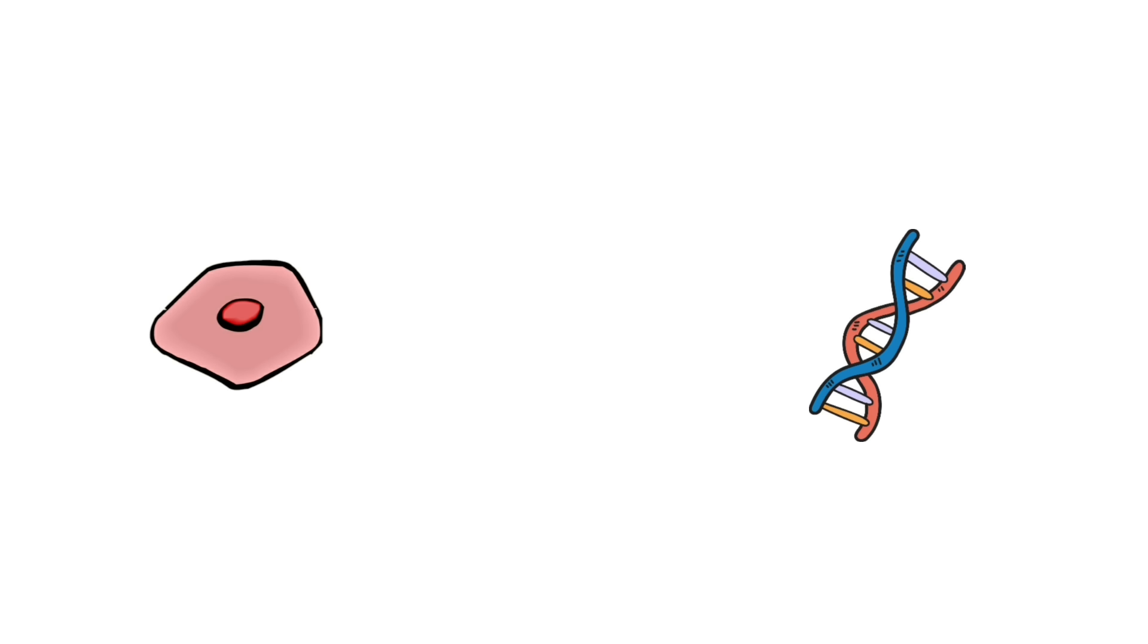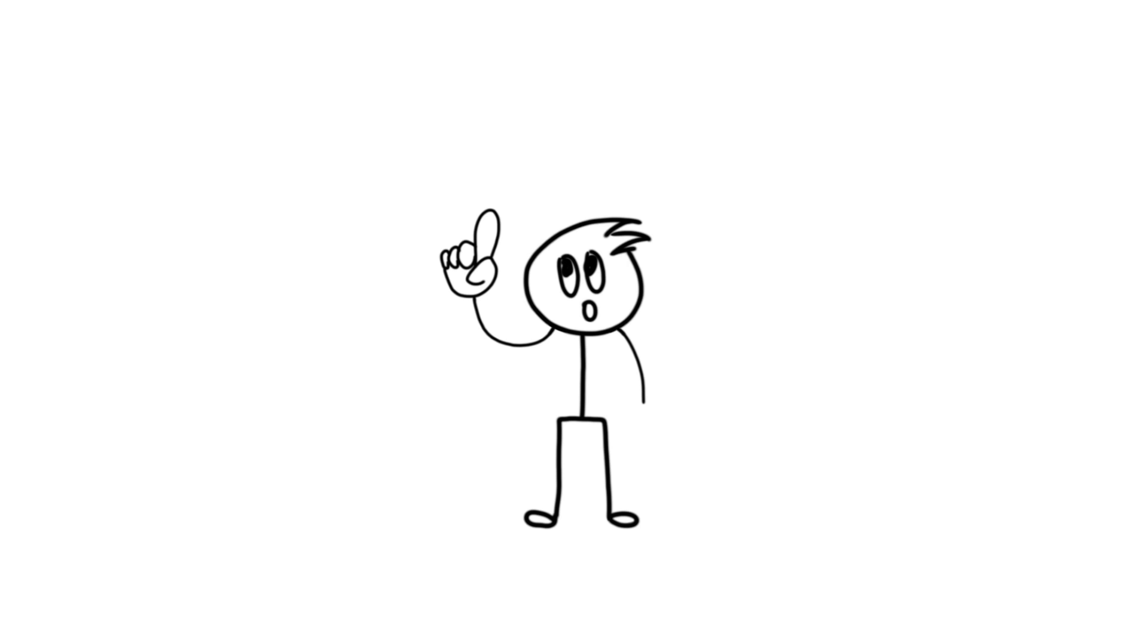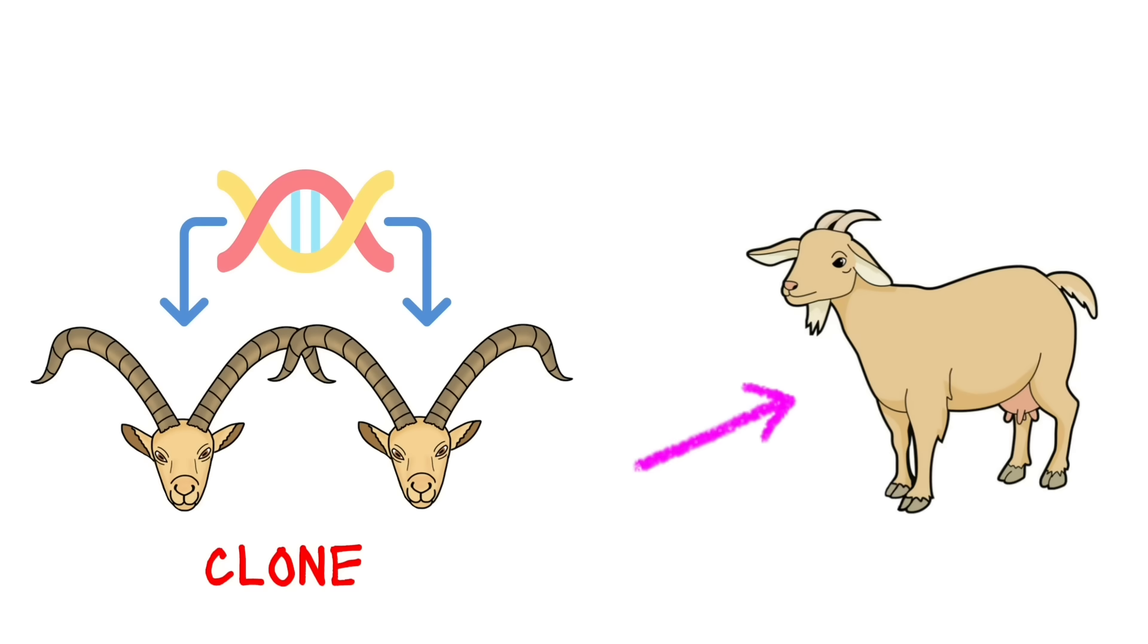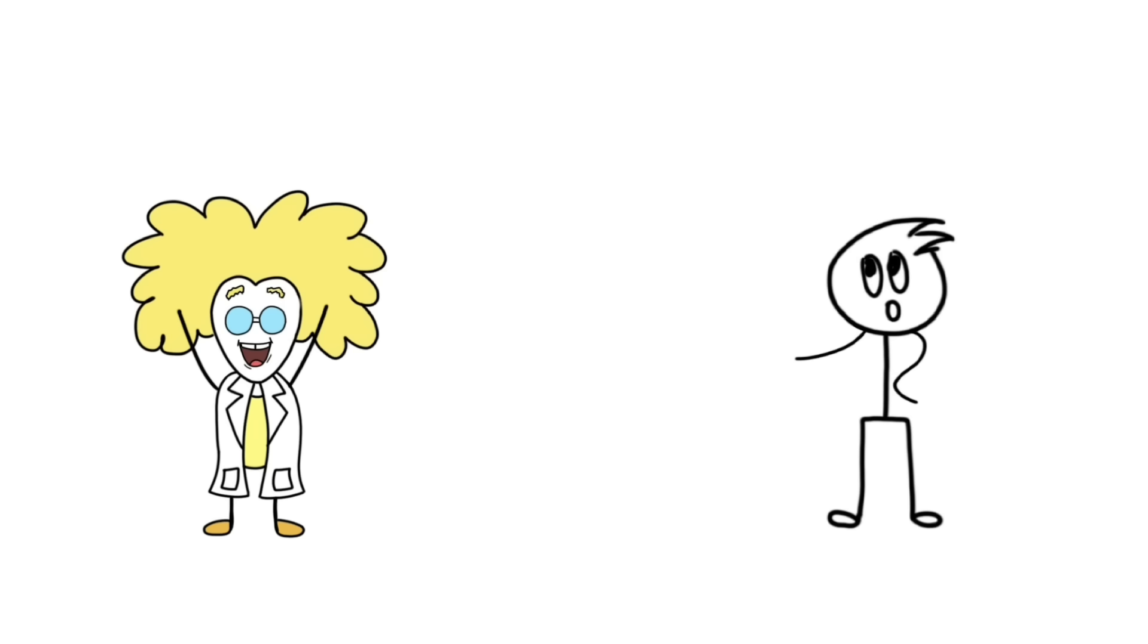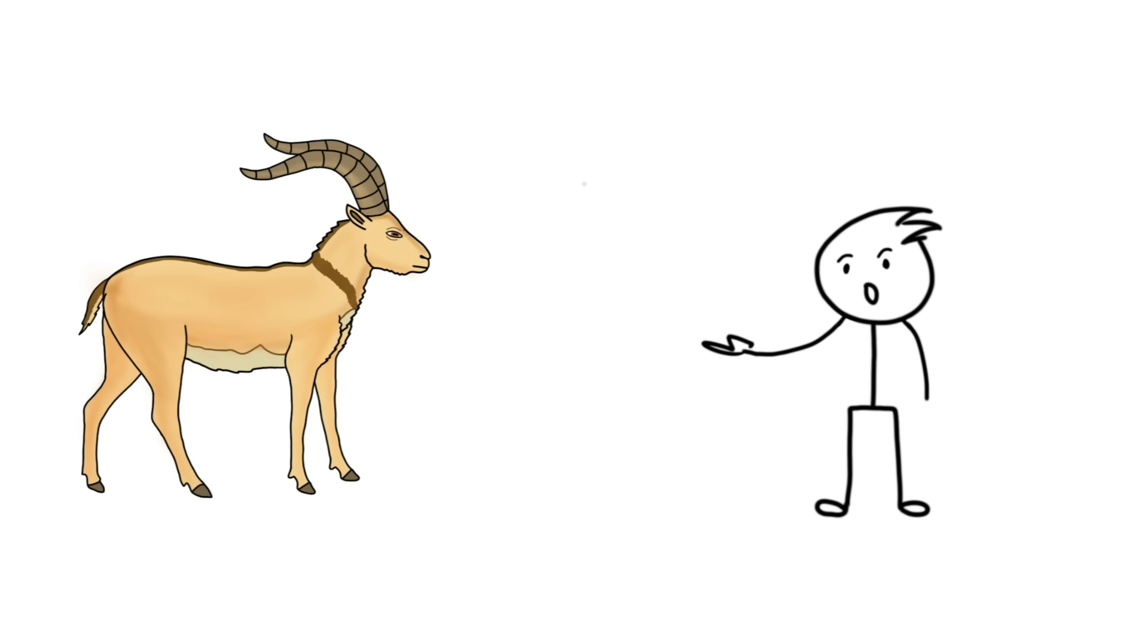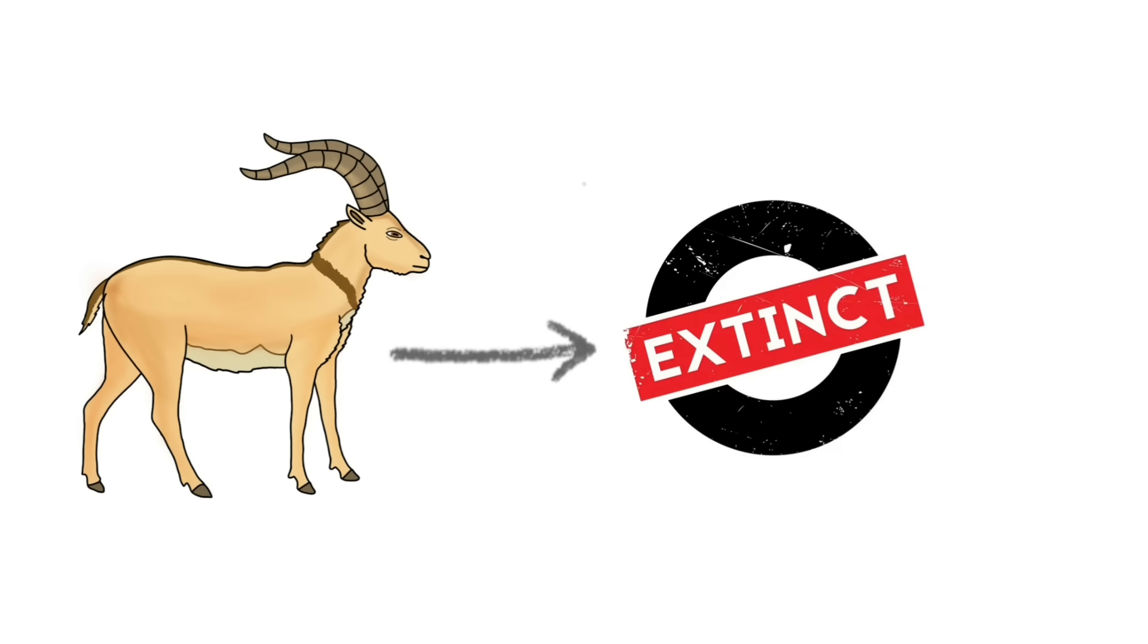But, since scientists had already collected the samples, they tried to clone her with the help of a female goat. The ibex was born again through C-section, and all the scientists were overjoyed, at least for seven minutes. Then, the calf died, making Pyrenean ibex the only species to go extinct twice.